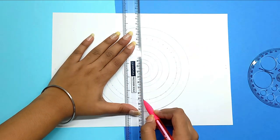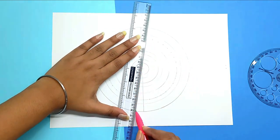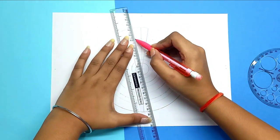Now, using a scale, you have to join the opposite points. Make sure that your line passes through the center.